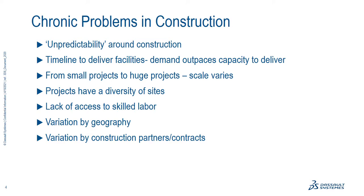Another major problem is that you have a huge scale range of projects — very small to massive — so any solution has to be very flexible and adaptable to different scales. Not only does it have to adapt to scale, but projects have a diversity of sites. Site conditions vary immensely from project to project, whether it's slopes, adjacent conditions, geographic location, weather, or available lay-down space for temporary material storage. Even if we standardize a process, we have to apply it to a huge diversity of sites, making it very challenging to apply automations that could make the process more predictable.